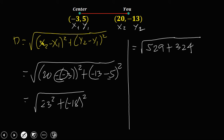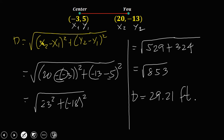Adding 529 plus 324 gives 853. Taking the square root of 853, the distance from the center is 29.21 feet.